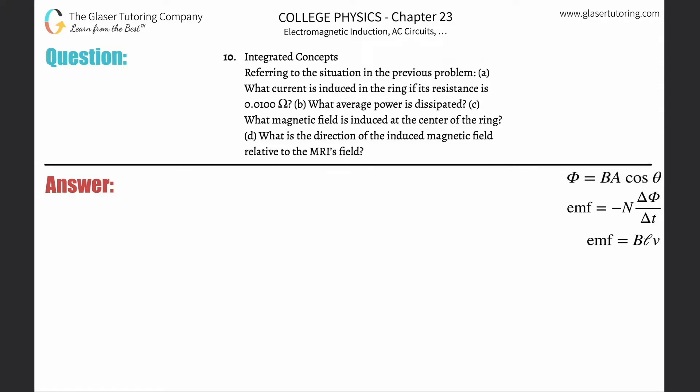Number 10, integrated concepts. Referring to the situation in the previous problem, letter A: what current is induced in the ring if its resistance is 0.01 ohms? Please take a look at number nine. I'm going to work off of that problem.